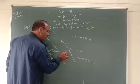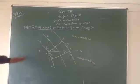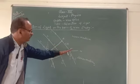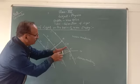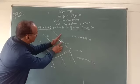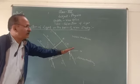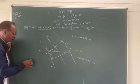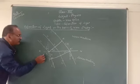The incident wavefront AB and the refracted wavefront A'B' are perpendicular to the plane of paper. The incident rays and refracted rays lie in the plane of paper because rays are perpendicular to the wavefront. This proves the first law of refraction.